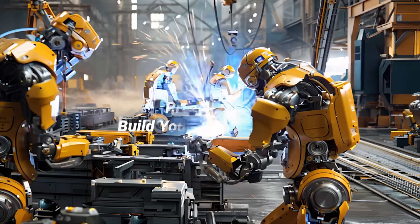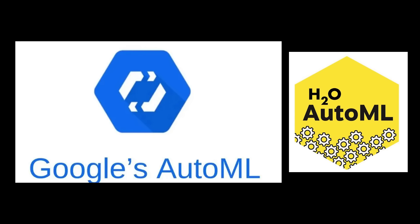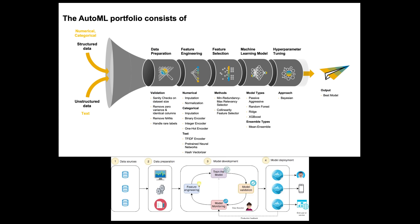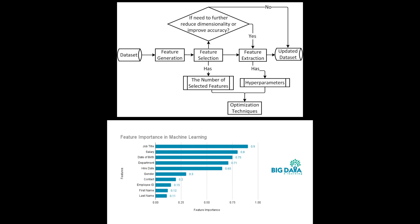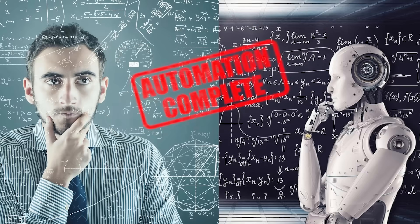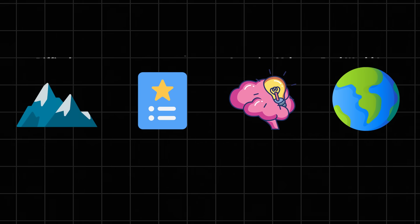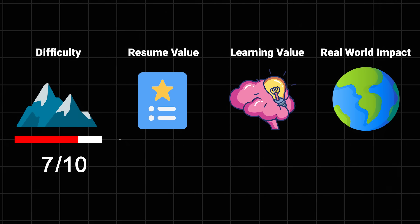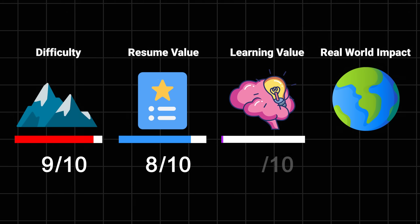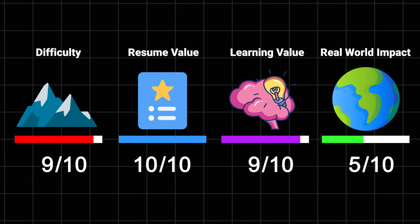And now for the 10x data scientist projects. Build your own AutoML. Ever use tools like Google's AutoML or H2O? Time to build your own. This project combines everything you've learned so far into one super system for any ML project you can think of. You'll create something that can automatically clean data, engineer features, select models, and optimize everything. It's like building a robot data scientist. Difficulty: 9 out of 10. Resume value: 10 out of 10. Learning value: 10 out of 10. Impact: 9 out of 10.